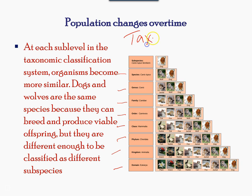As an example for the domestic dog, shown in this figure, at the level of order it indicates the relationship among dog, wolf, jackal, fox, and cat.